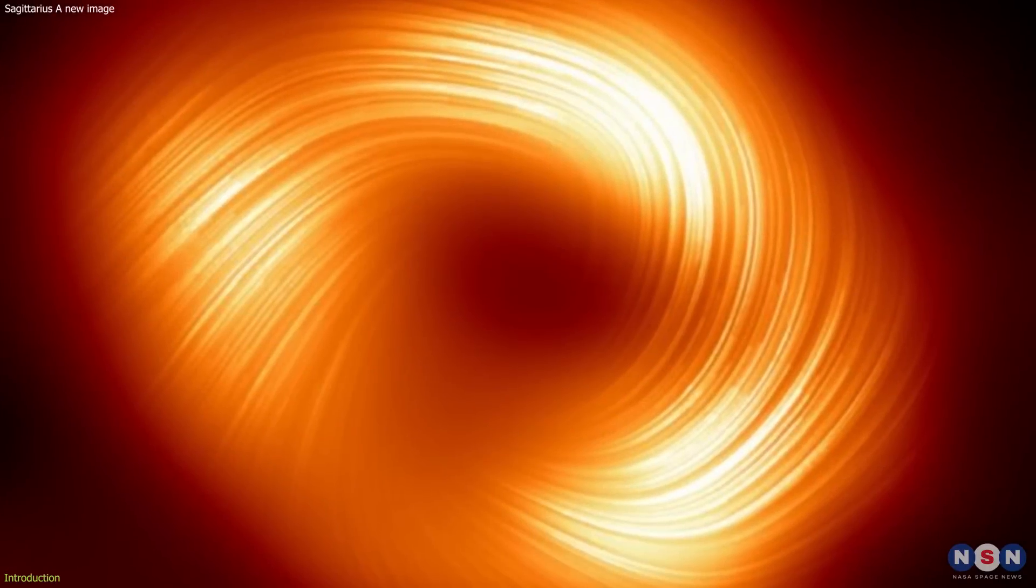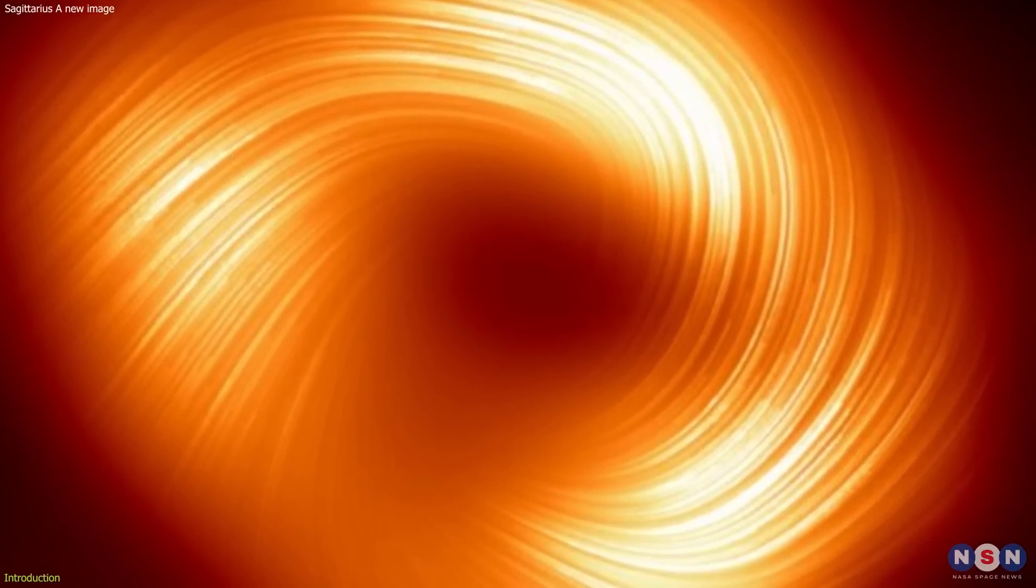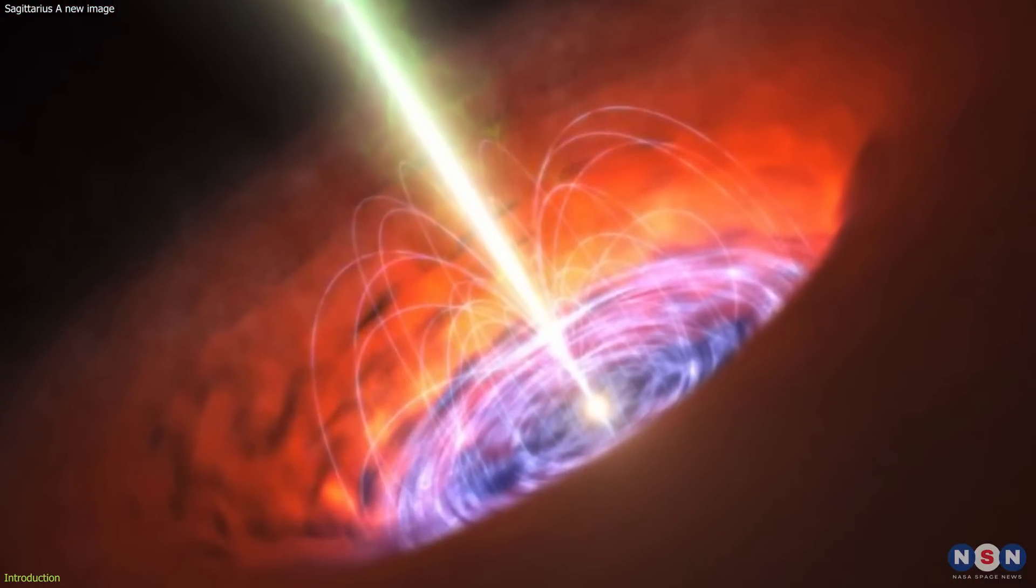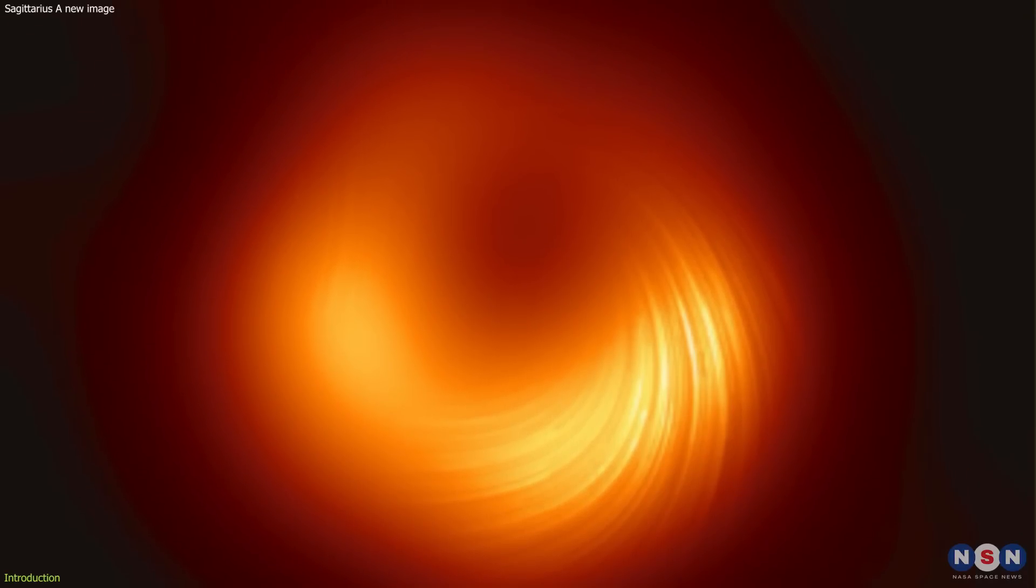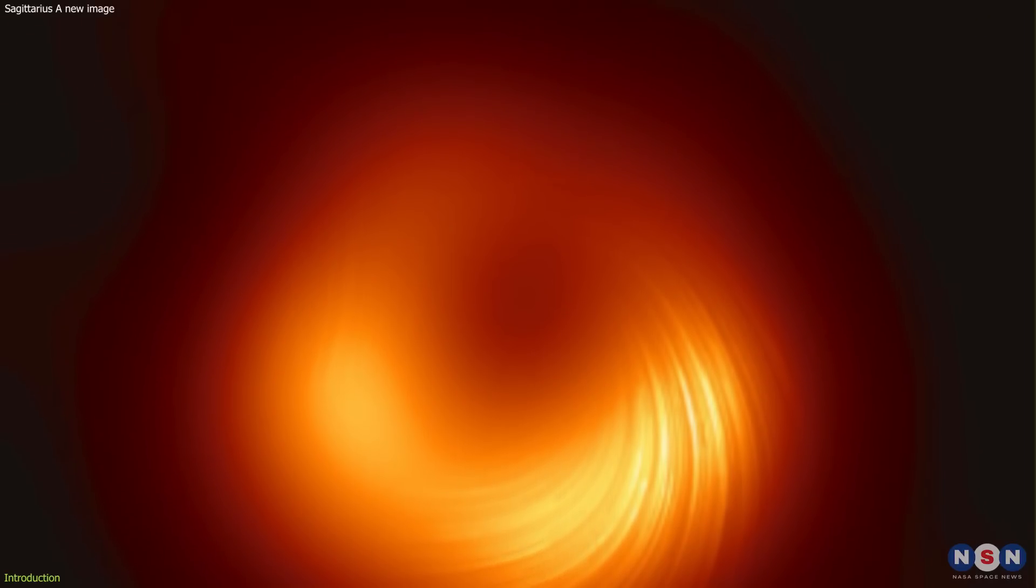A team of astrophysicists has successfully captured and analyzed the polarization effects in a direct image of Sagittarius A star's shadow, a feat that unveils a magnetic structure echoing that of the only other supermassive black hole shadow directly imaged, M87 star.